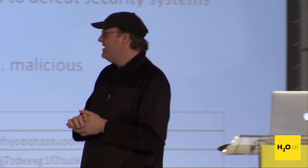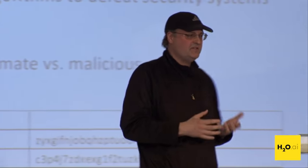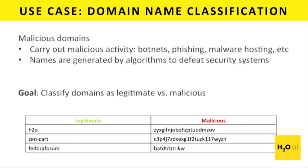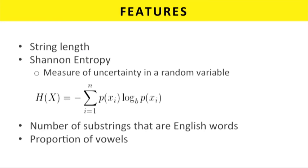The use case is trying to identify malicious domains. Botnets, phishing, and other internet attack vectors originate from malicious domains that are automatically generated to defeat security tools. The goal is to classify a domain name as either legitimate or malicious. To do this we need to build some features — what comes in is basically just a domain name, and we want to build features both during training and in production, then feed those into a model.